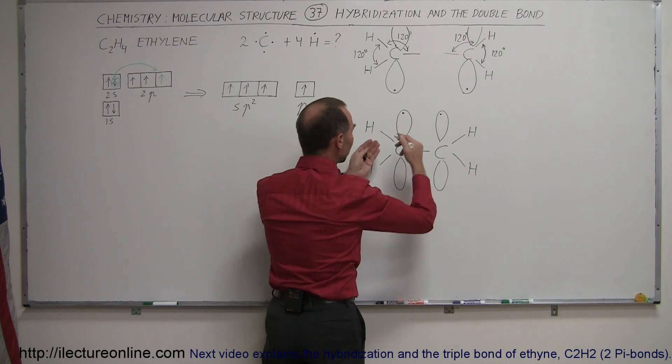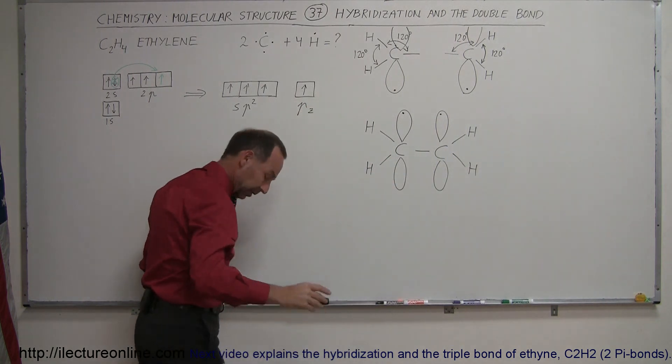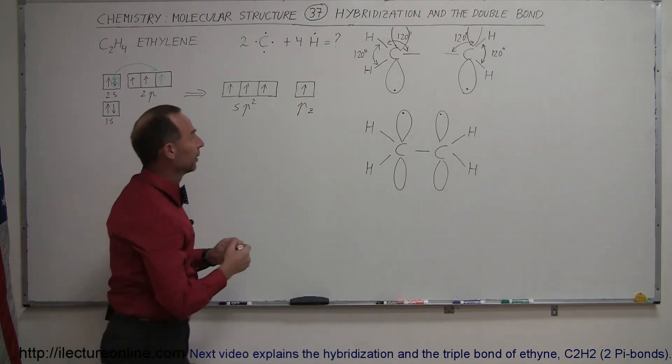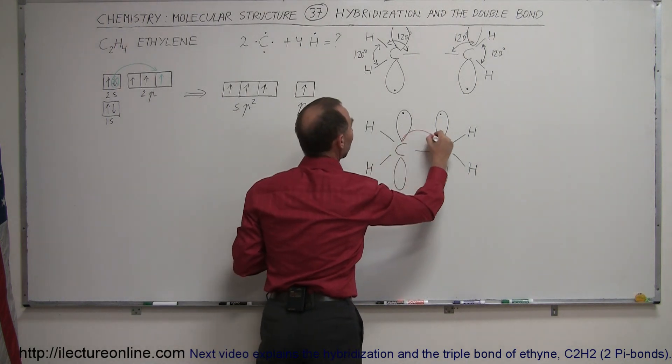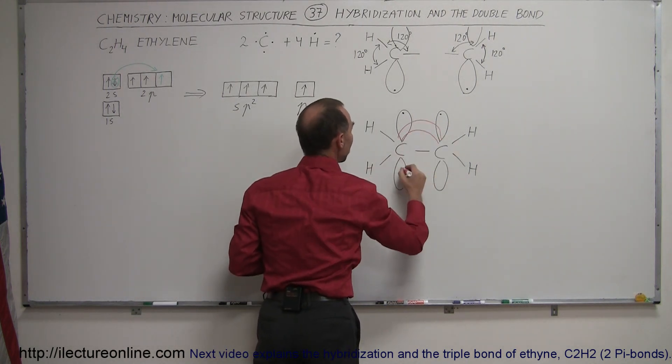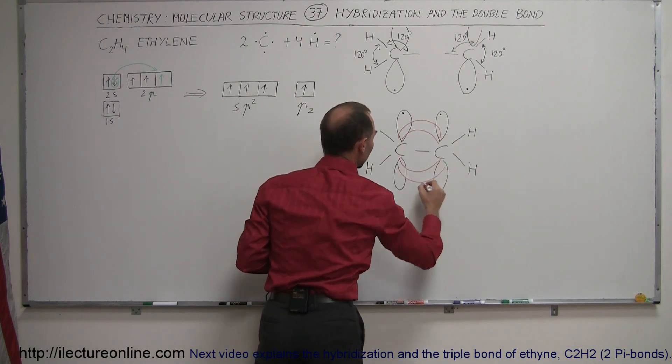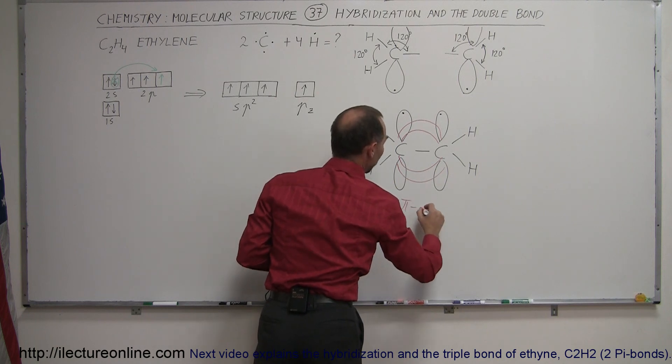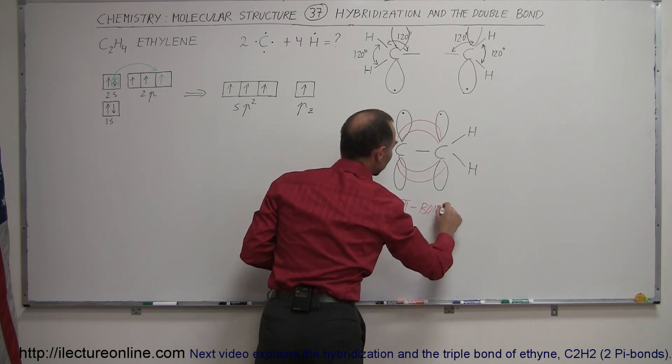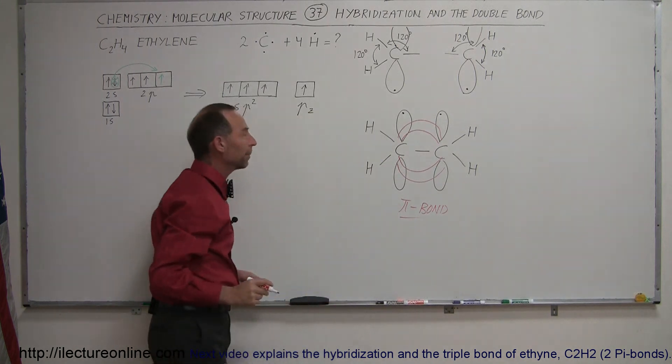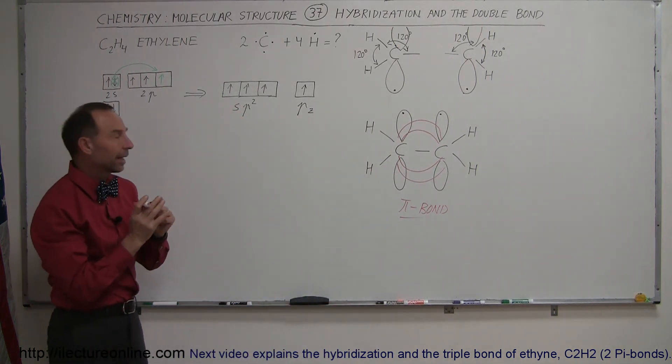And now what happens is those then will bend over. So those then will bend over and end up making a pi orbital like that. So we end up with a pi bond, I should say. Not necessarily a pi orbital but a pi bond connecting that second bond.